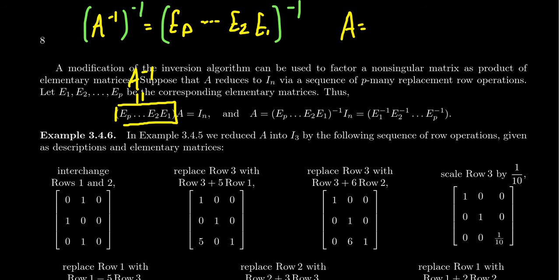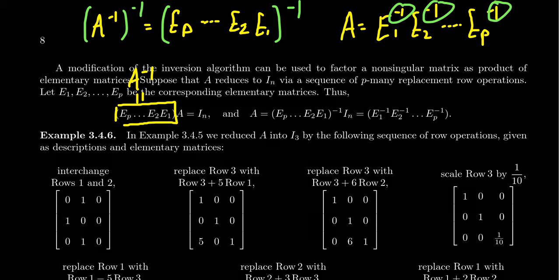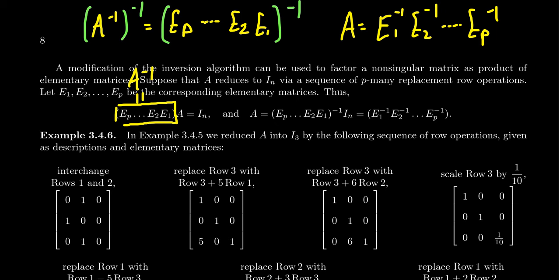On the other hand, when you take the inverse of the right-hand side, because we have a product of matrices, the shoe-sock principle comes into play. You first put your socks on, then your shoes, but you have to take your shoes off before your socks. So you reverse the order of the product, putting E1 first, then E2, up to EP, but you must take the inverses of each: E1 inverse, E2 inverse, all the way up to EP inverse. Their inverses will likewise be elementary matrices.